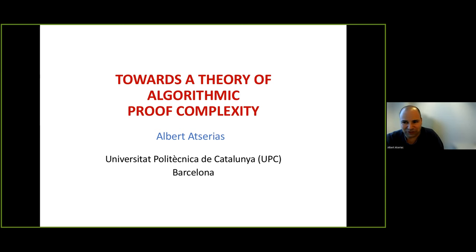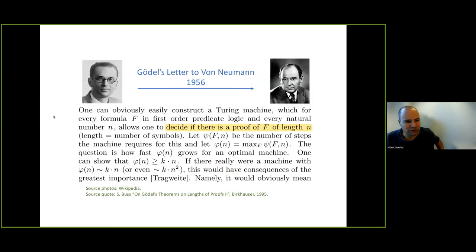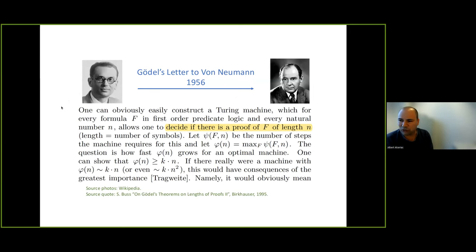Let's get started with the history of proof complexity, going back many years to the 20th century. Here we see two giants: on the left is Kurt Gödel and on the right is von Neumann. The story is that von Neumann was sick at home, and Gödel wrote a letter to his friend and colleague. In this letter, after some social discussion, he started asking mathematical questions — which we can now think of as the first time the question of proof length was considered as a mathematical object of interest.